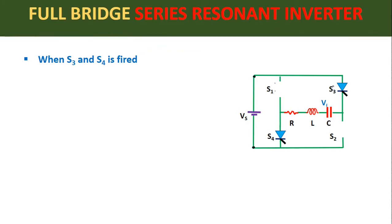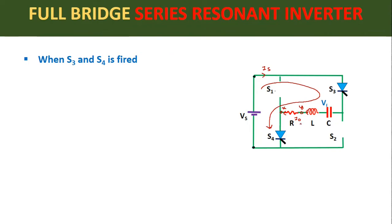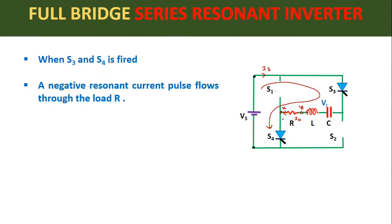When S3 and S4 switches go into the ON condition, S1 and S2 will go into the OFF condition and act as open circuit. When S3 and S4 are fired, the current flows in the reverse loop. The load current enters at point Y and exits from point X, so the load current direction is reversed compared to the first case. We therefore take a negative current pulse for the load current. However, the source current direction does not change — it remains a positive current pulse regardless of which pair is ON.